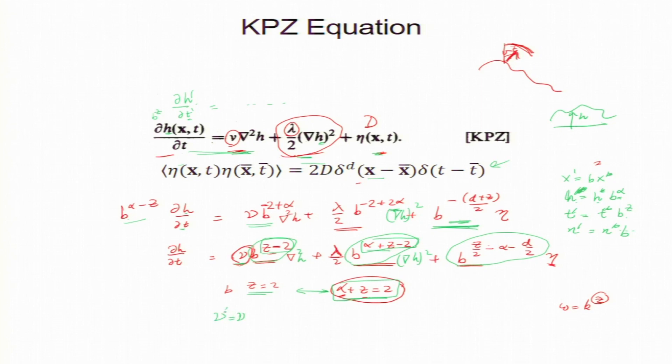Nu, nu prime equal to nu b to the power some, some like we did for viscosity renormalization. In fact, this, this, this guy should be renormalized. Nu should be renormalized. And we will get some additional b dependence. And that will give us a correct result, okay.